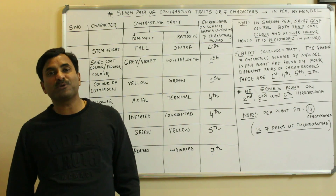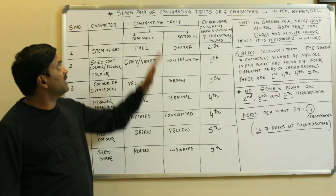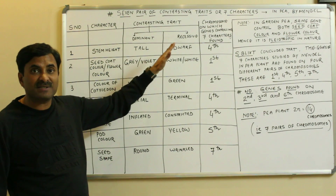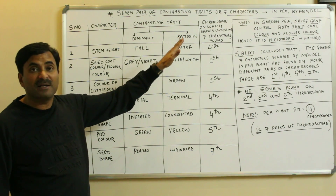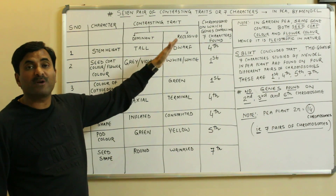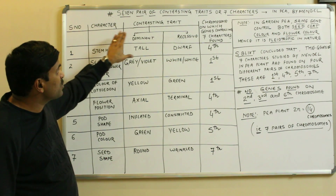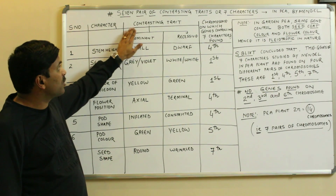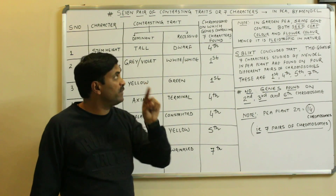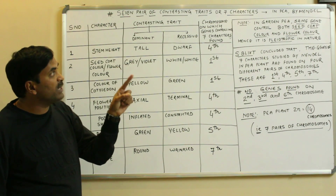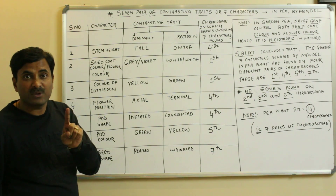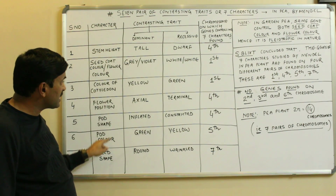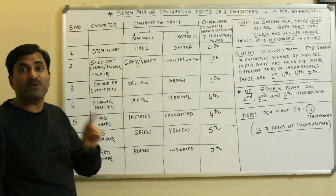Hello to all. Today we are going to discuss about the seven pairs of contrasting traits, or the seven characters studied by Mendel in the garden pea plant known as Pisum sativum. I have made a table with columns indicating the serial number, character, the contrasting traits, and the chromosome on which the gene controlling each character is found. By viewing this table you can see that there are seven characters and seven pairs of contrasting traits.